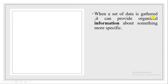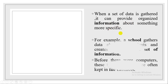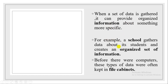When a set of data is gathered, it can provide organized information about something more specific. If we have a set of data, it can provide organized information about a specific topic or subject. For example, if we are taking a school, a school gathers data about its students and creates an organized set of information. We all know that in schools, all the schools are gathering information about the students.